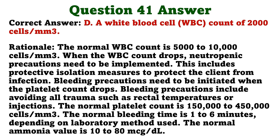Methenamine, a urinary antiseptic, is prescribed for the client. The client's chart reads: blood glucose 102 mg/dL, chest x-ray normal, renal insufficiency, folic acid 0.5 mg orally daily. The nurse reviews the client's medical record and should contact the health care provider regarding which documented finding to verify the prescription? A. Renal insufficiency. B. Chest x-ray, normal. C. Blood glucose, 102 mg/dL. D. Folic acid, 0.5 mg, orally daily. The correct answer is A: renal insufficiency. Methenamine is a urinary antiseptic. Methenamine can cause crystalluria and should not be used in clients with renal impairment. Therefore, the nurse would verify the prescription if the client had a documented history of renal insufficiency. The laboratory and diagnostic test results are normal findings. Folic acid may be prescribed for a client with renal insufficiency to prevent anemia.